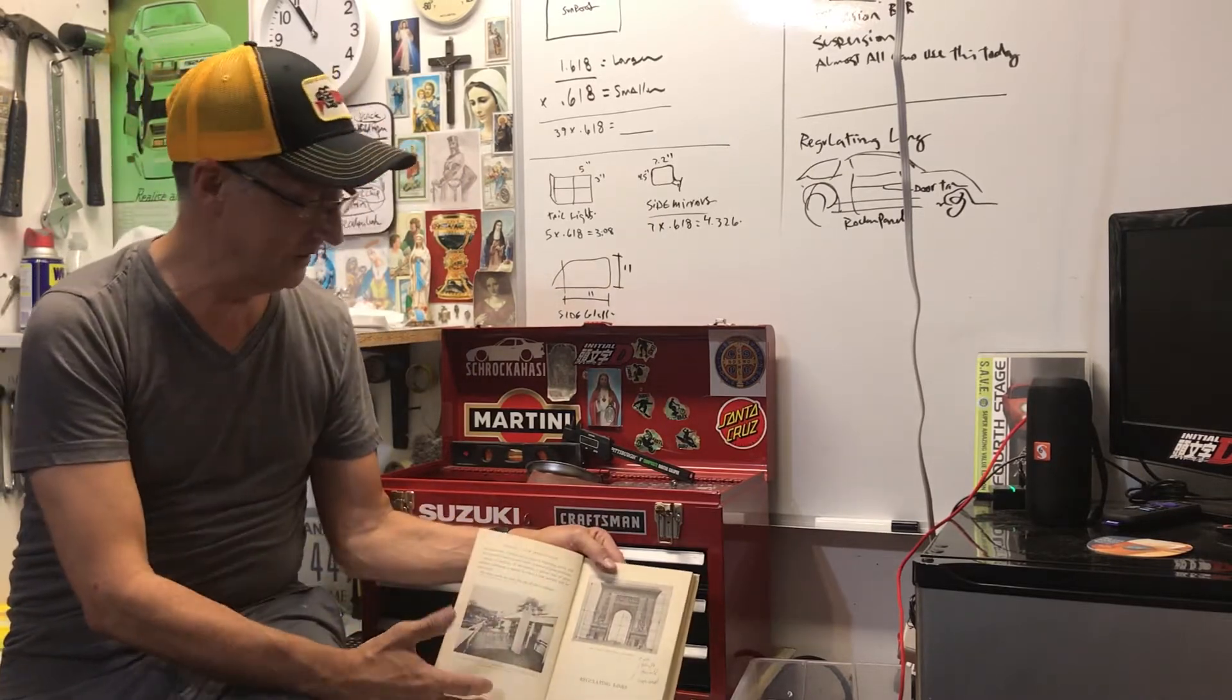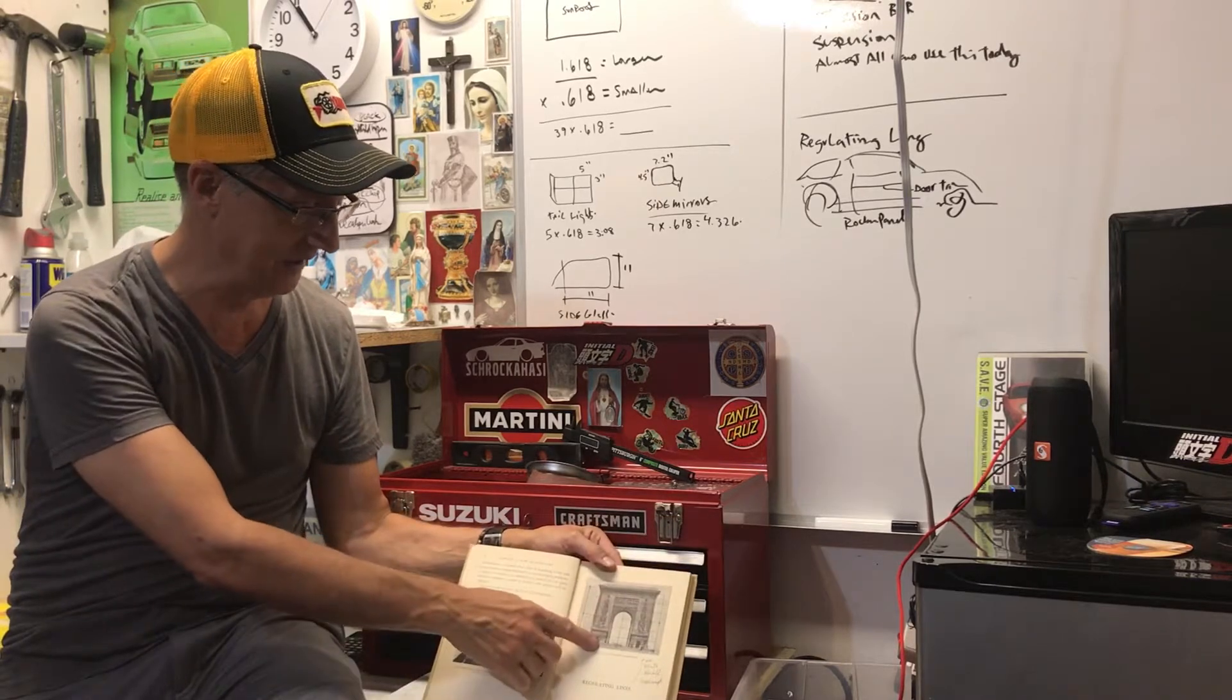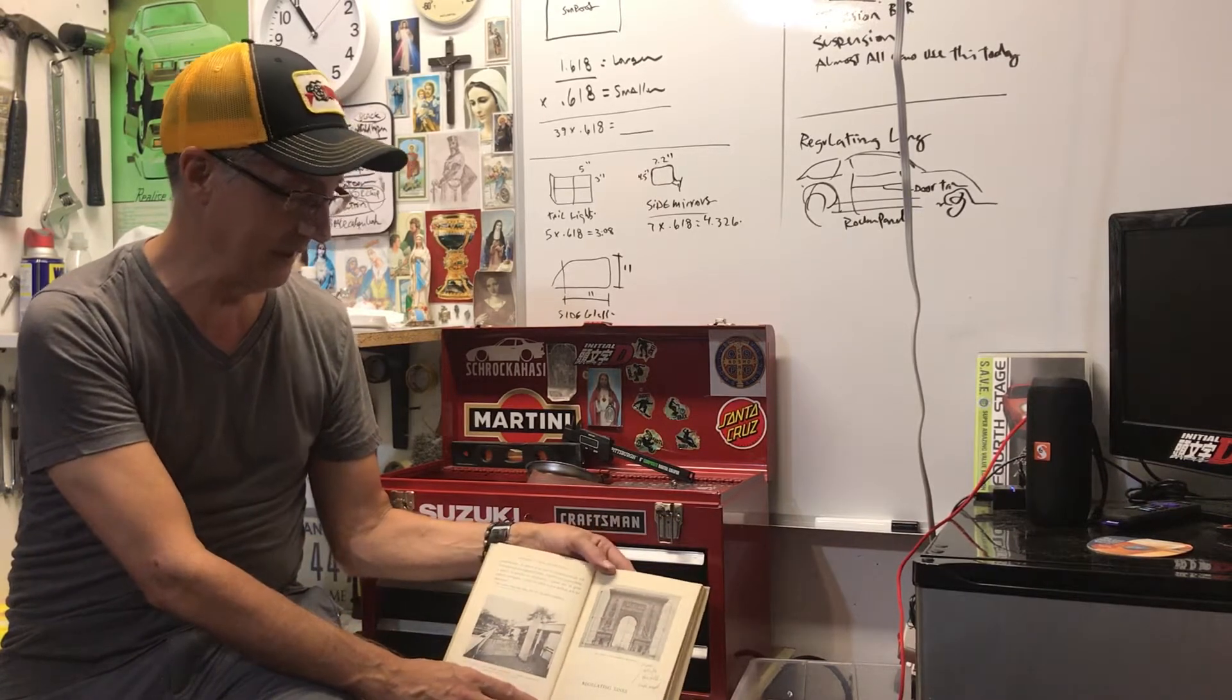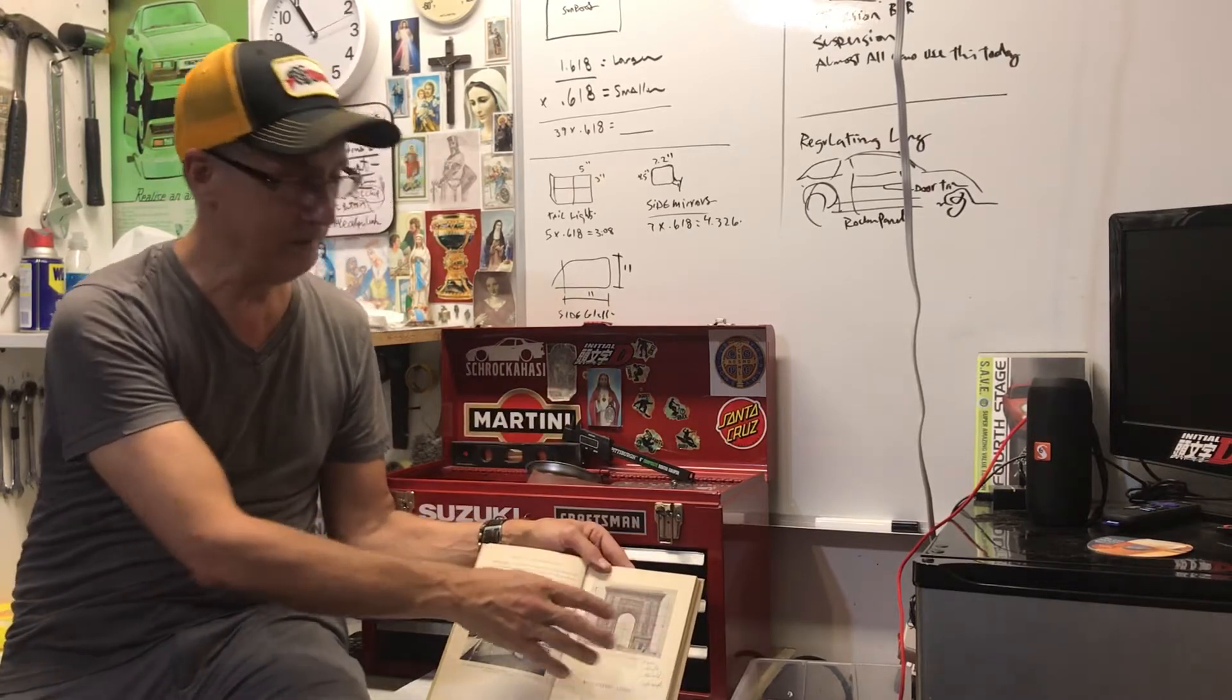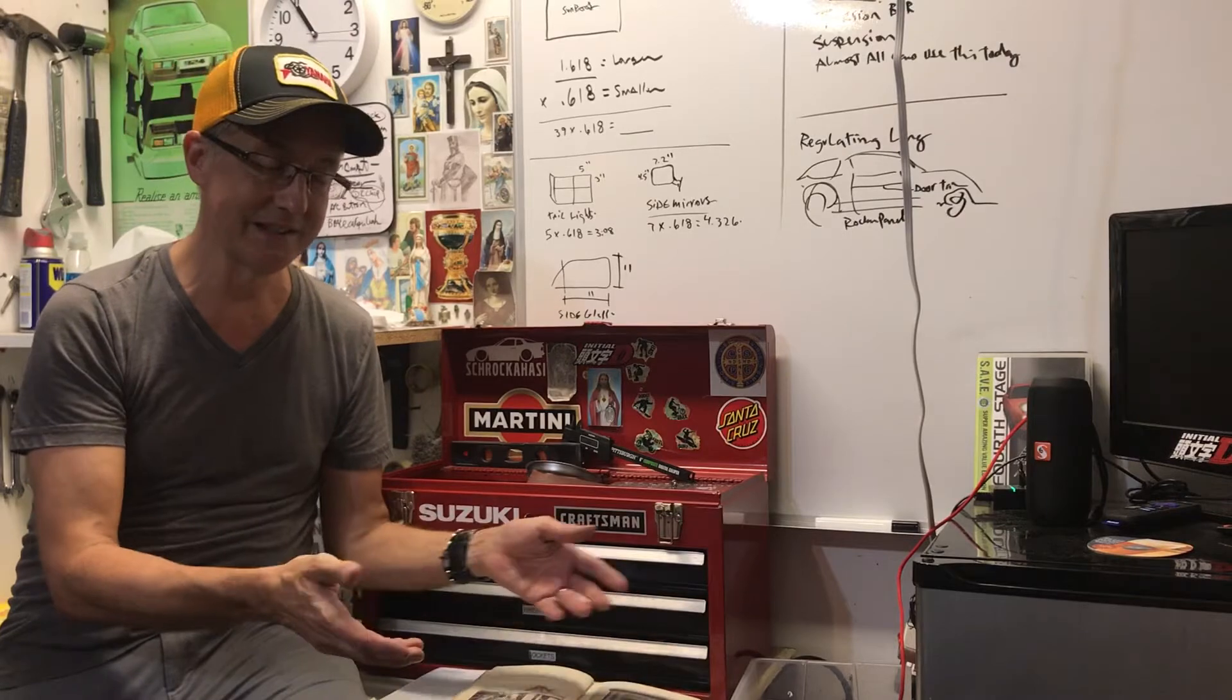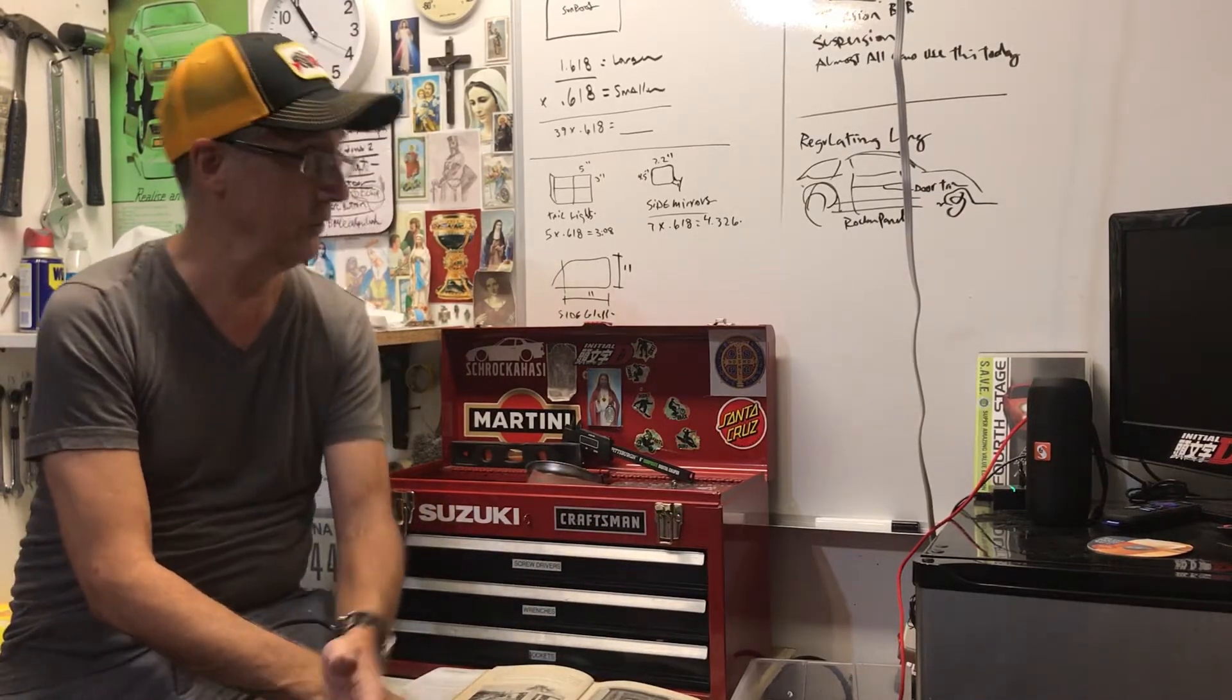I have here a couple books. This is Le Corbusier's Towards a New Architecture and it has a section in here about regulating lines and the golden section. Even forms like the buildings in the past, like in Greece, the Parthenon, is based on the golden proportion.